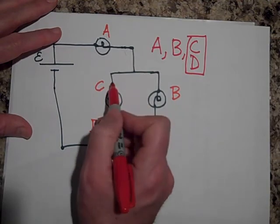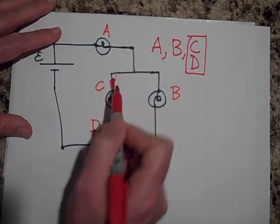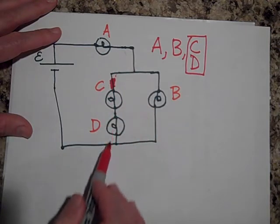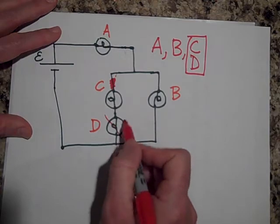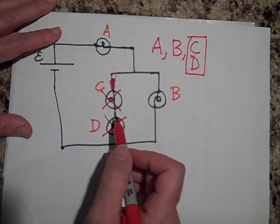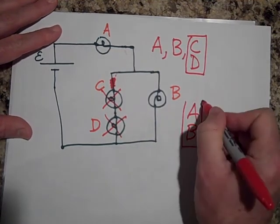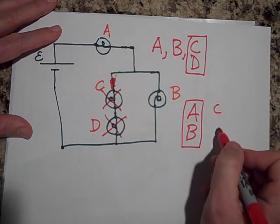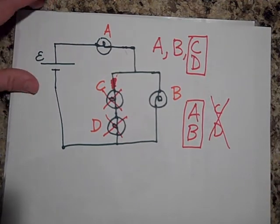Okay. When I unscrew C, that pretty much breaks off this current. That breaks that path out. So C and D are both out. These guys are out. B, on the other hand, will now get all the same current as A. So A and B are the same brightness. And C and D, they're out.